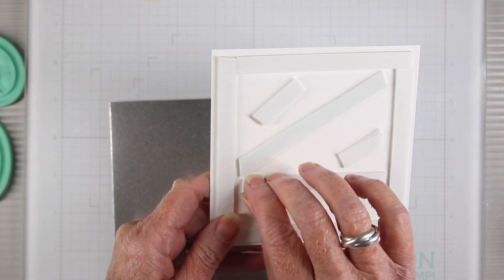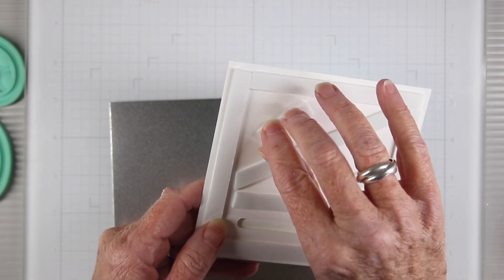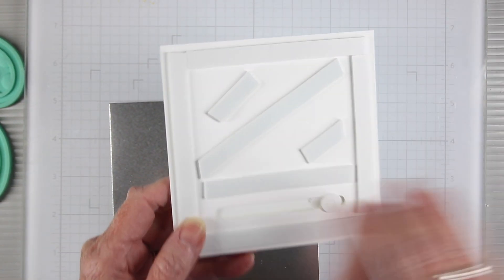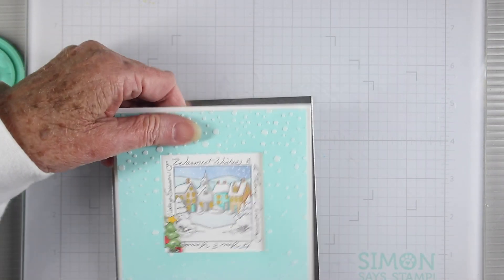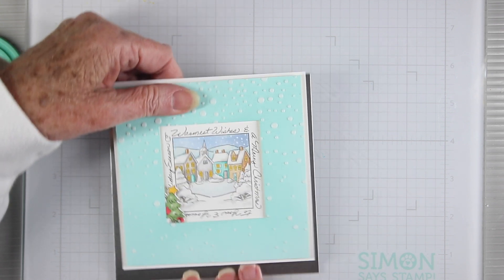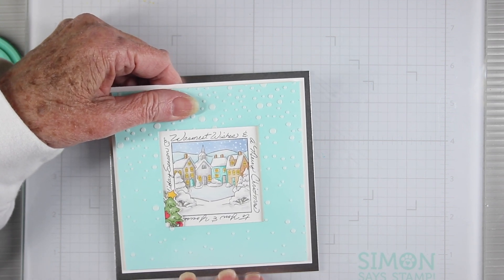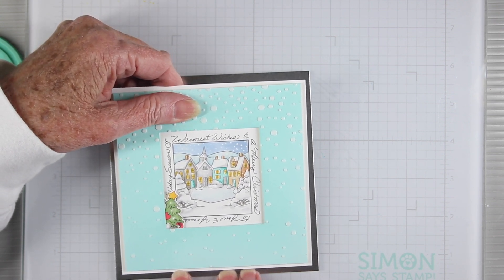I'll be putting this onto some of the Simon Says Stamp silver matte cardstock and I'll just remove some of the center pieces before I stick this down in place. Once I have this adhered, I can remove the backing of the outside pieces.